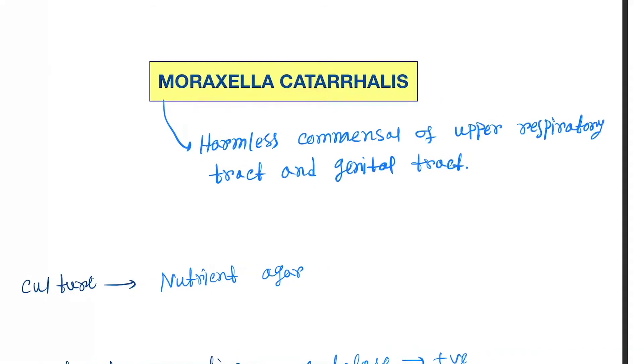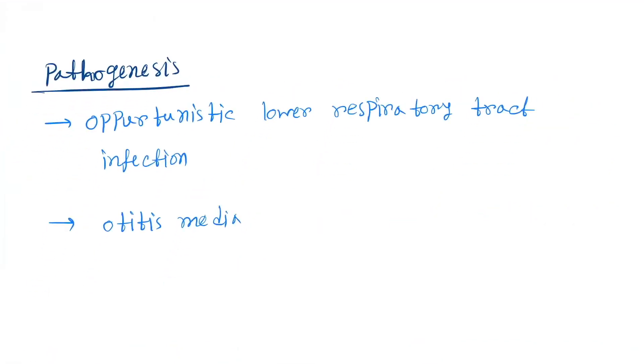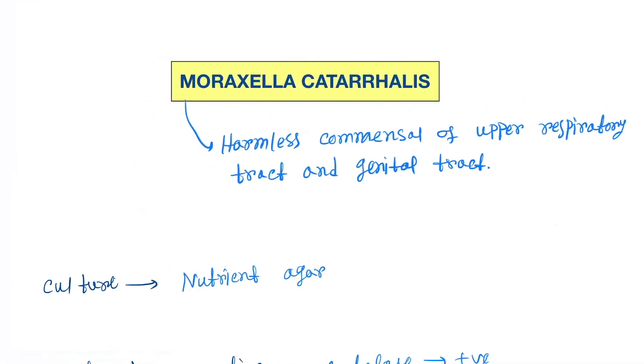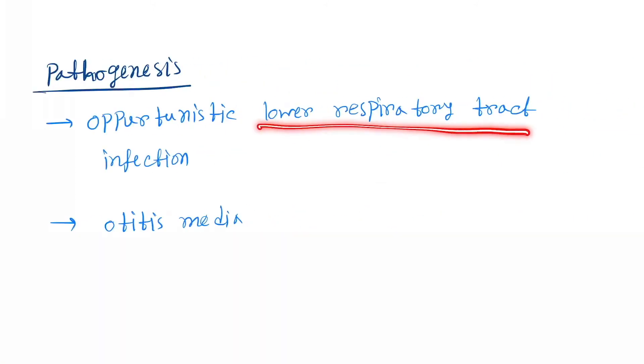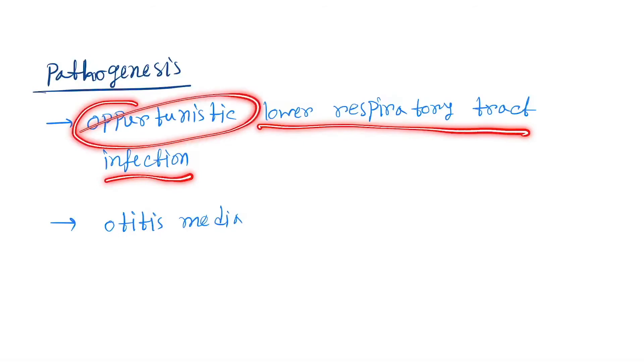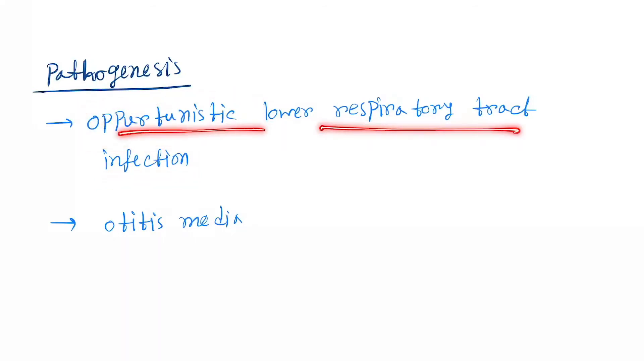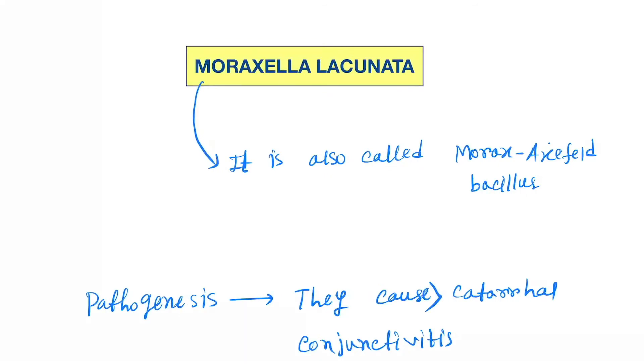This is Moraxella catarrhalis. Now come to pathogenesis. Here you can see the upper respiratory tract and genital tract. Pathogenesis: opportunistic lower respiratory tract infection and otitis media.